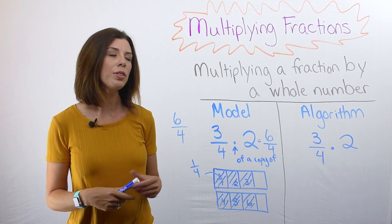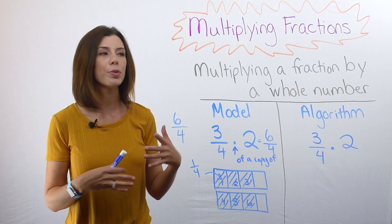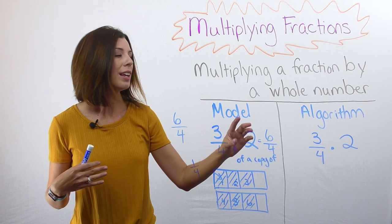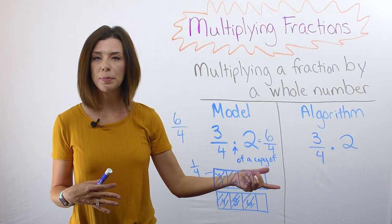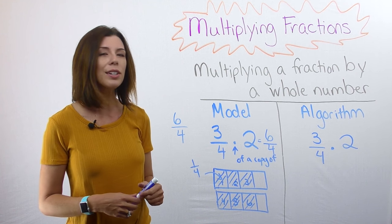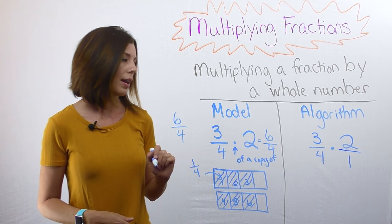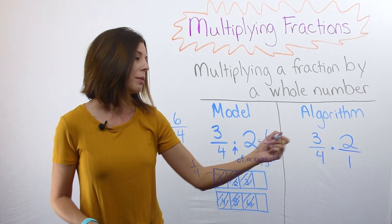Now sometimes students get a little tricked up by the fact that if I'm following the same algorithm as I was with a fraction by a fraction, I need to multiply the numerators and then multiply the denominators. But where's my denominator? Remember, because you're talking about two wholes, we can put that over one.